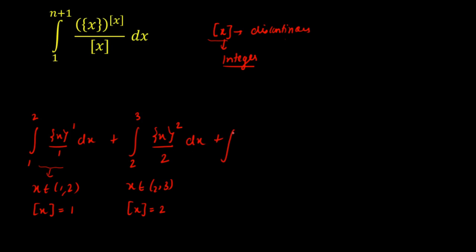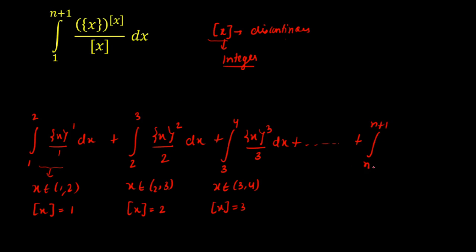Continuing in the same way for different integer intervals up to n+1: from 3 to 4, [x] = 3, giving {x}^3 / 3 dx, and so on. The last interval is from n to n+1, where [x] = n, giving the integration from n to n+1 of {x}^n / n dx.